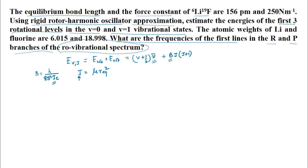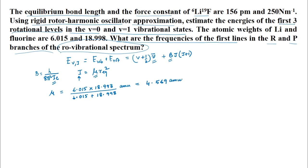To find the moment of inertia I we need the reduced mass. The reduced mass mu = (6.015 × 18.998) / (6.015 + 18.998) = 4.569 amu. The moment of inertia I = mu · R_eq² = 4.569 amu × 1.661×10⁻²⁷ kg/amu × (156×10⁻¹² m)² = 1.846×10⁻⁴⁶ kg·m².